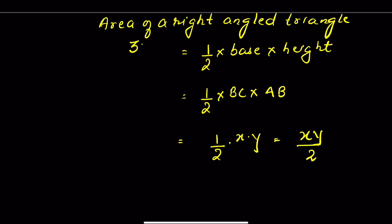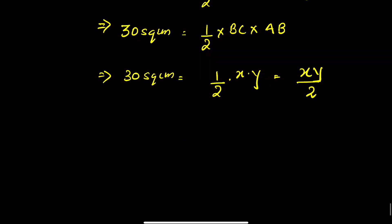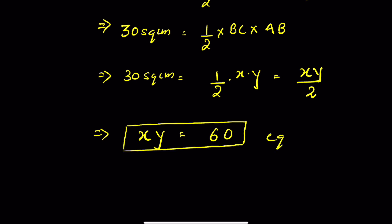Given the area of the right-angled triangle is 30 square centimeters, from here we can calculate XY is equal to 60. Let this be equation 1.